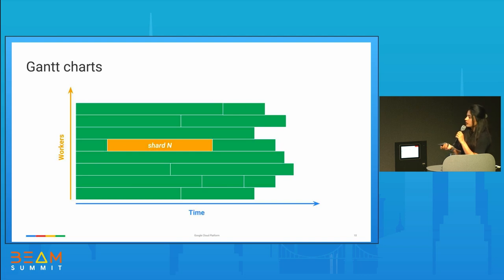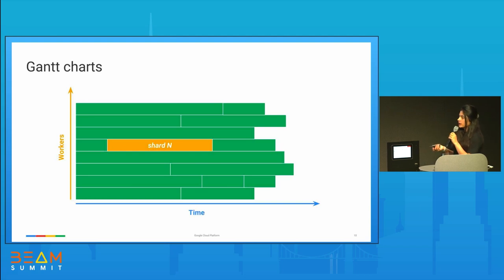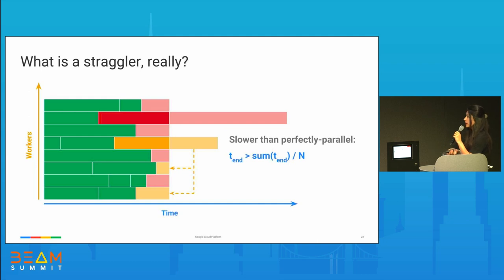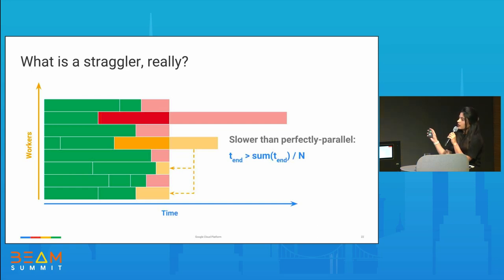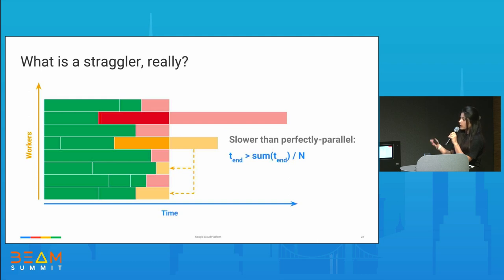This is the same Gantt chart that explains how parallelizable shards work across different workers. A straggler takes more time than the other shards — almost double. If there is a shard taking more time, it will cost you a lot of time and money. In a perfect parallelizable pipeline, you'd try to parallelize it — you can calculate the remaining work, divide by time available, and estimate how much longer it will take.